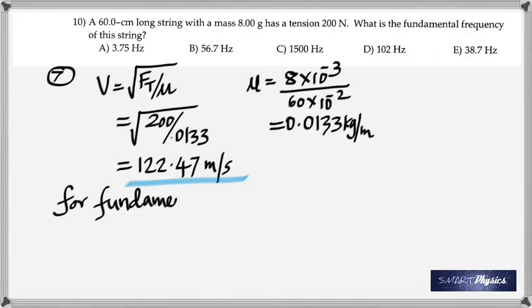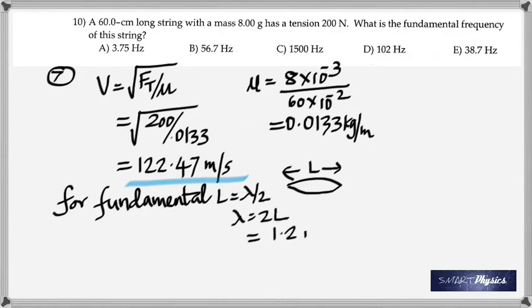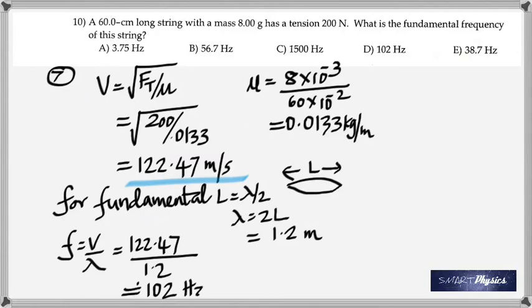So once you get the velocity, for the fundamental frequency, you know it's vibrating as one segment. So the length is lambda by 2. Lambda is 2 times the length. So you get 1.2 meters. So once you get that, frequency is speed by wavelength. So 122.47 divided by 1.2, which gives 102 hertz. And that is question number ten. Thank you.